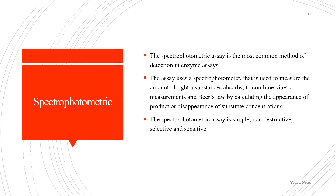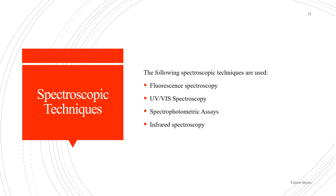The spectrophotometric assay is one of the most common methods of detection in enzyme assays. It uses a spectrophotometer to measure the amount of light a substance absorbs, combining kinetic measurement with Beer-Lambert's law by calculating the appearance of product or disappearance of substrate concentration. This assay is simple, non-destructive, selective, and sensitive. UV light is often used since the common coenzymes NADH and NADPH absorb UV light in their reduced form but not in their oxidized form. An oxidoreductase using NADH as a substrate could therefore be assayed by following the decrease in UV absorbance at a wavelength of 340 nm as it consumes the coenzyme.